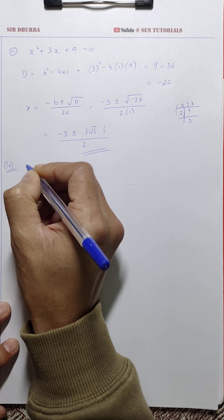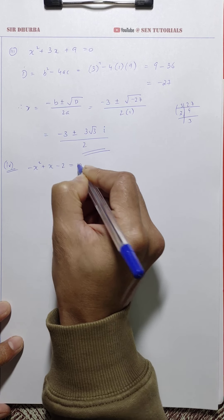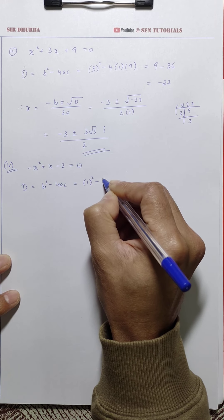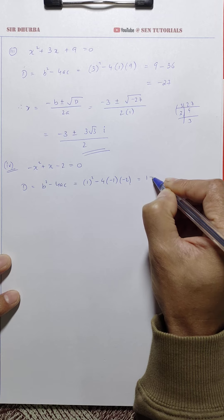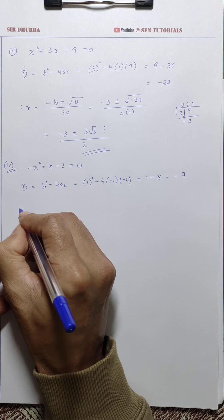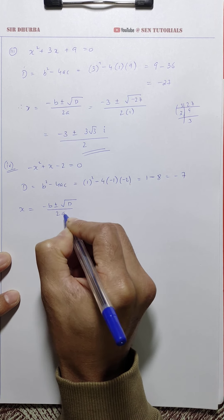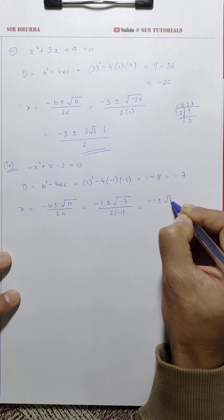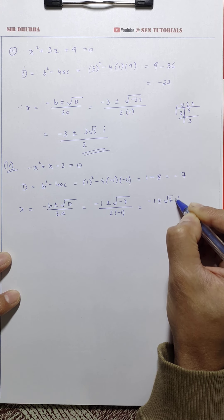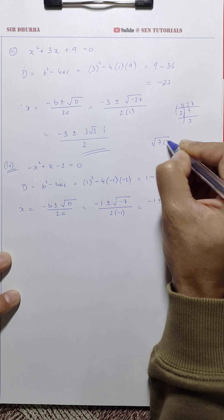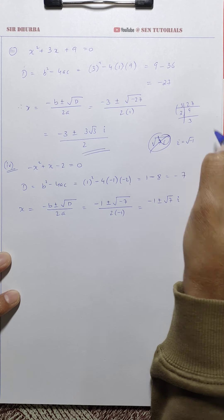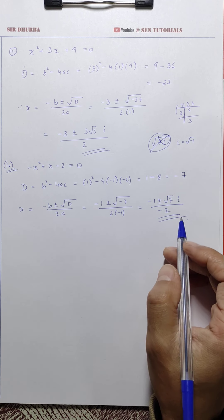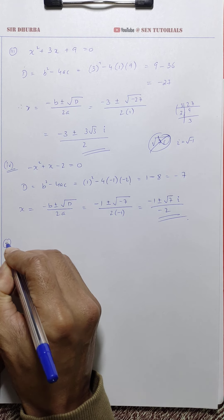Question 4: -x² + x - 2 = 0. Here a = -1, b = 1, c = -2. D = b² - 4ac = 1 - 4(-1)(-2) = 1 - 8 = -7. So x = (-b ± √D) / 2a = (-1 ± √(-7)) / (2·(-1)) = (-1 ± √7 i) / -2. Be careful to write i outside the root — some students write it incorrectly inside.